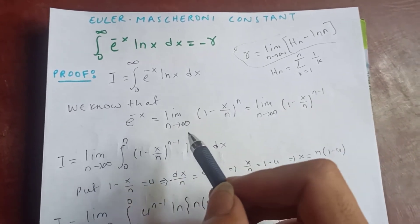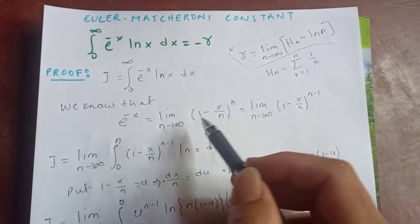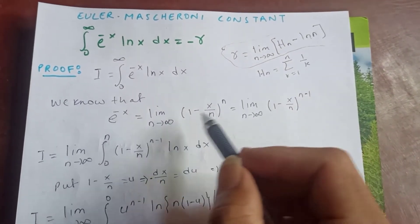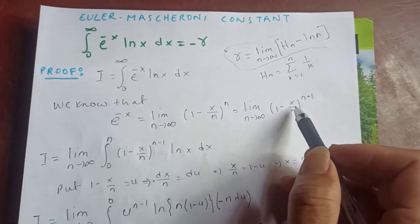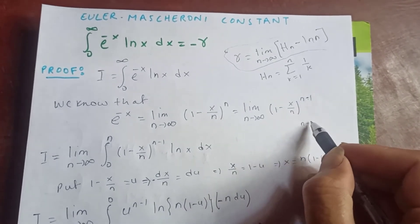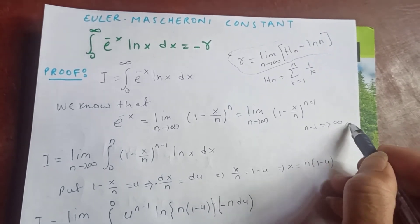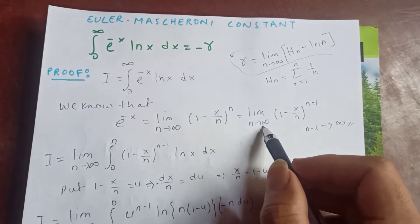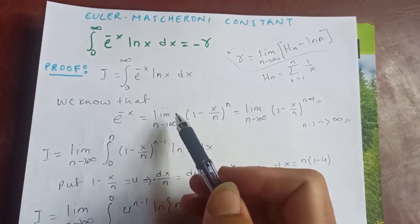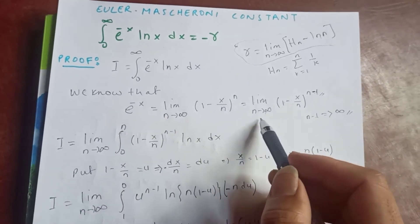Since n is a very large number, raising to the power n or n-1 doesn't change things significantly. So we can write e^(-x) as the limit as n → ∞ of (1 - x/n)^(n-1). Therefore, I equals the limit as n → ∞ of the integral, replacing e^(-x) with this expression.